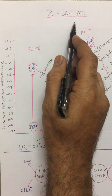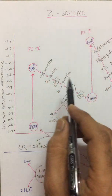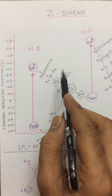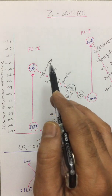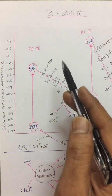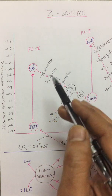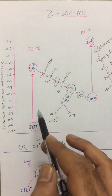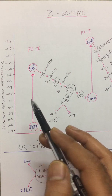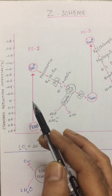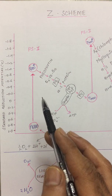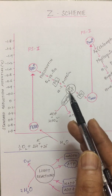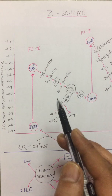Photosynthetic Z Scheme. Introduction to photosynthesis has been given in the last video. Here a detailed explanation is given for the conversion of water and carbon dioxide into oxygen and carbohydrates.